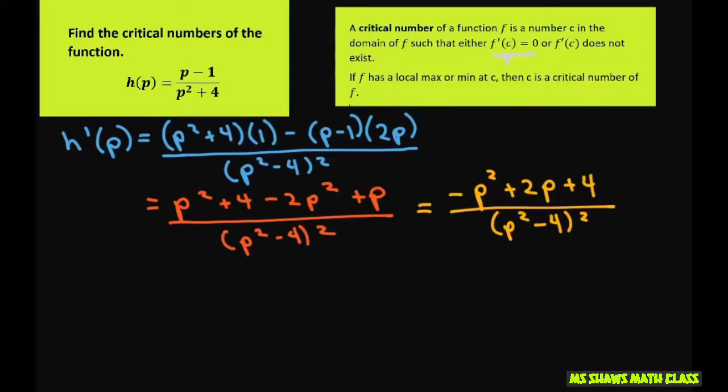Now, we want to set our h prime of p equal to 0, so set this to 0. We can't factor this, so we're going to use the quadratic formula. If you cross multiply, the denominator goes away. And this is supposed to be plus, sorry about that.